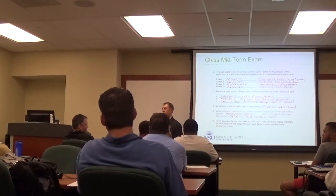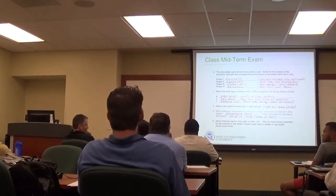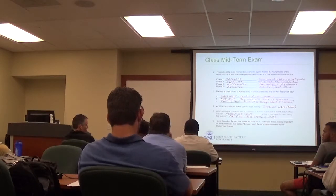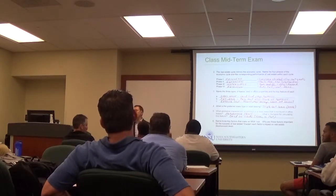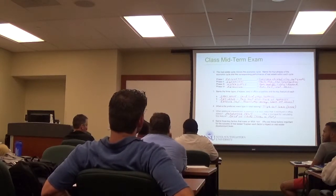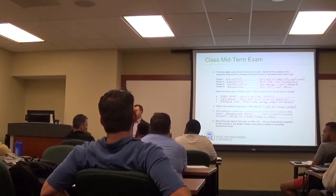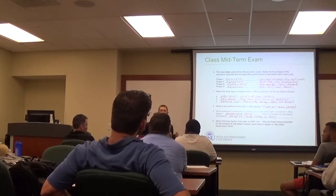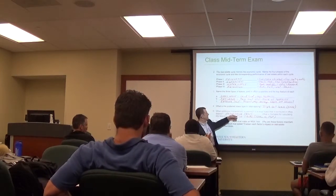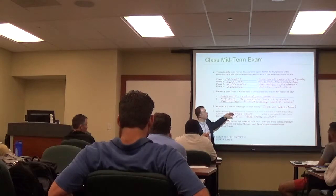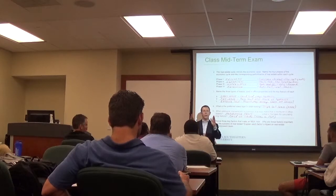A student asks: what percentage do they usually take from sales? The professor answers: it could be all over the map — percentage rent can range from 6% to 10% depending on the type of retailer. For small retailers, it's often a higher percentage. You can do percentage rent purely based on sales, or you can have a base rent with percentage rent above a breakpoint.